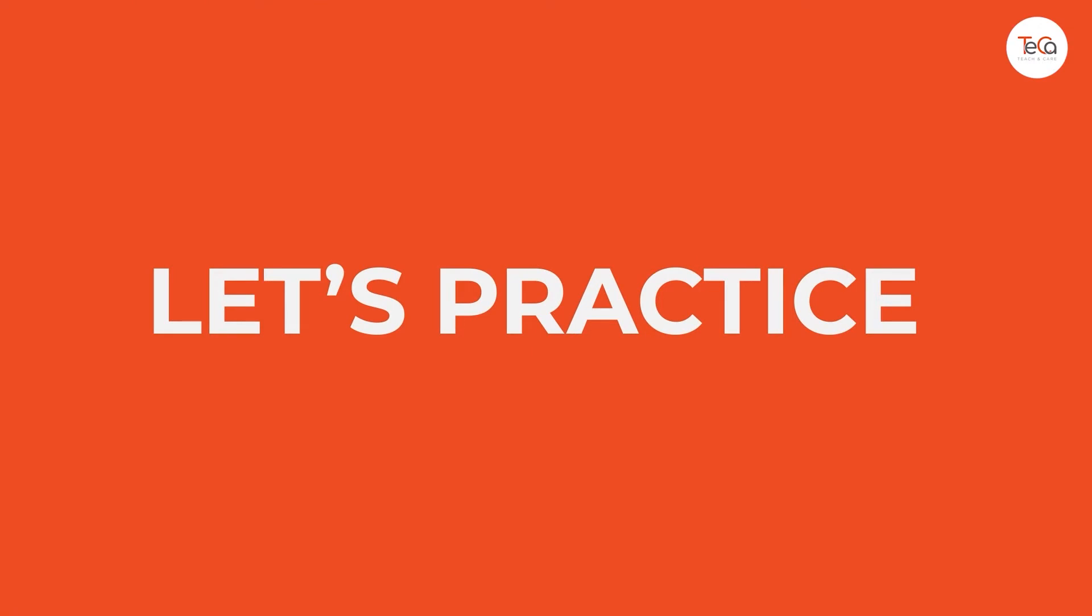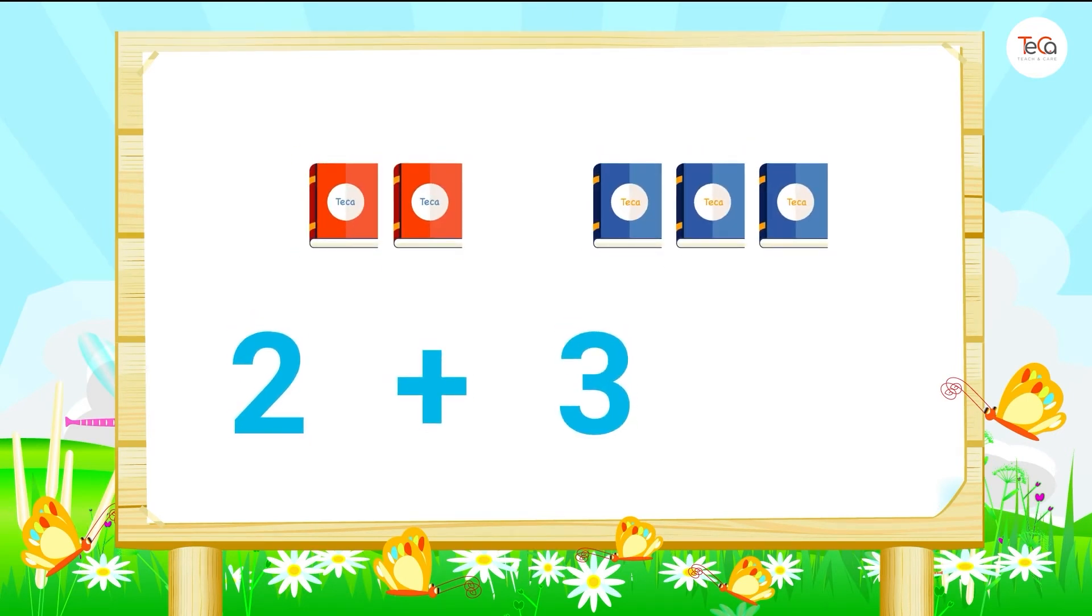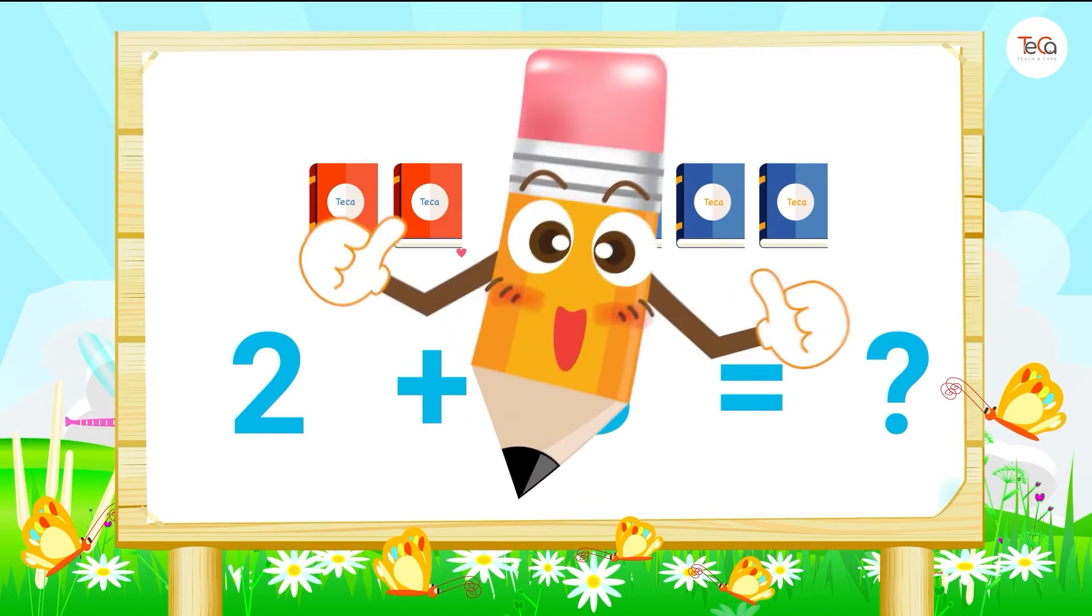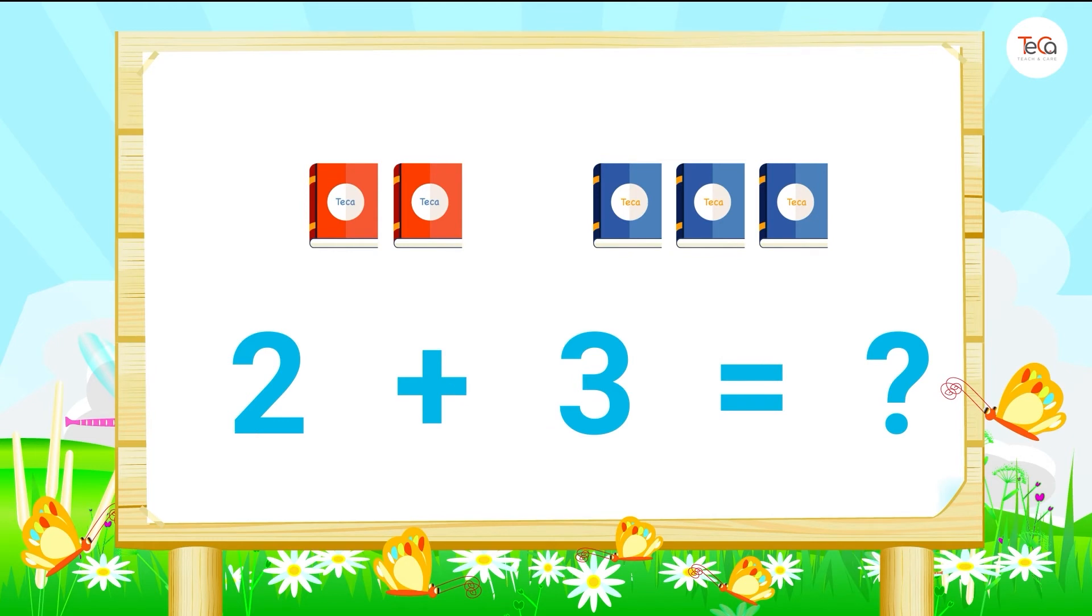Now let's practice. Two books plus three books equals... Very good. Here we have one, two, three, four, five books. So two plus three equals five.